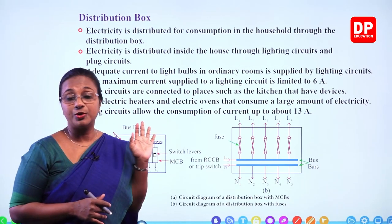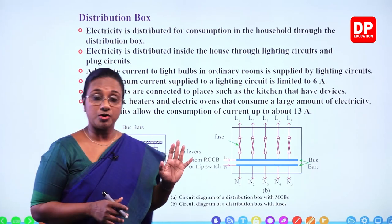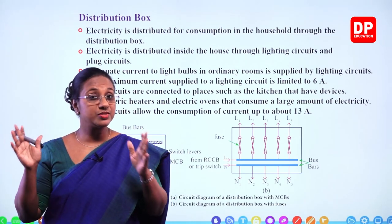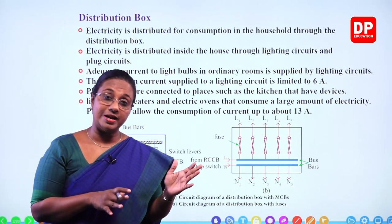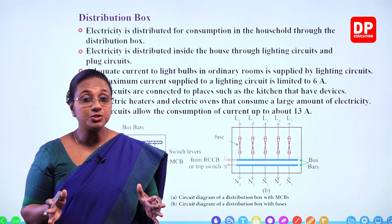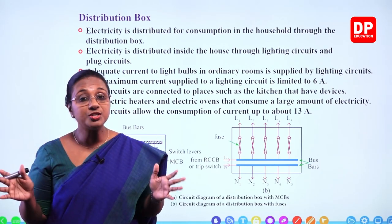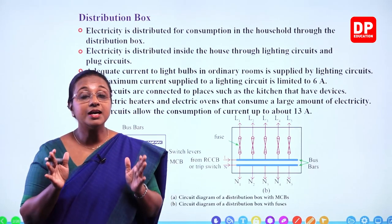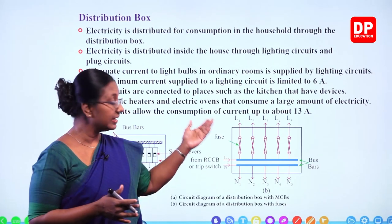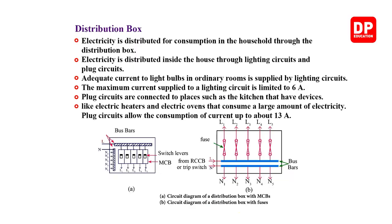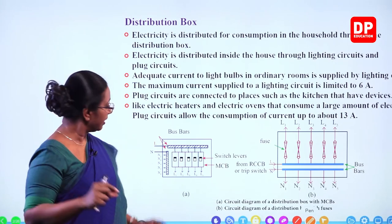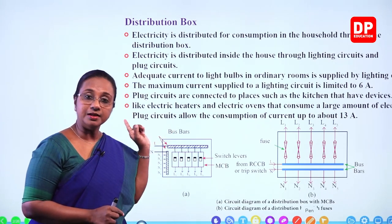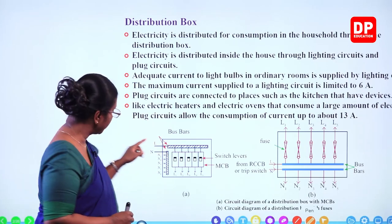So the next component we are going to discuss is the distribution box. In old houses, the distribution box is separate, because there it is the fuses that are present inside it. But in modern household circuits, the distribution box, isolator, and trip switch are all together inside the consumer unit. Now this distribution box has a bus bar. Here you can see the bus bar — that is a bar to which the live line coming from the RCCB is connected.